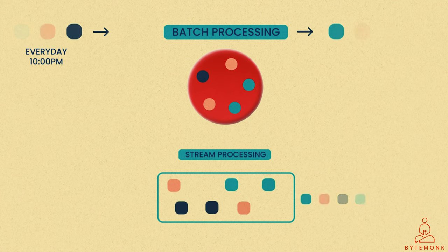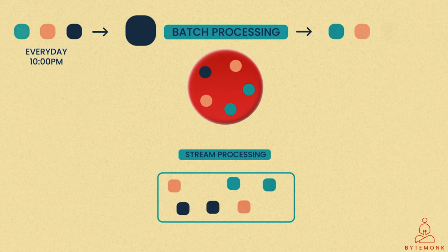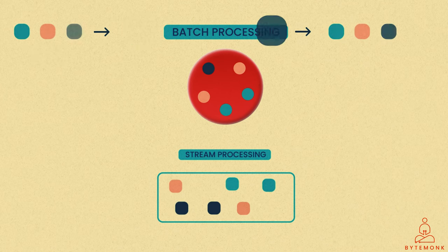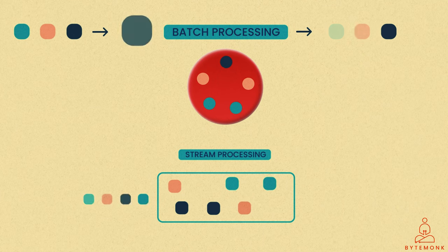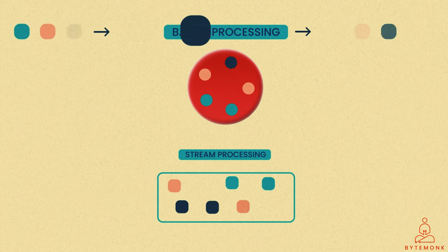So while stream processing is ideal for real-time insights, batch processing is often used for tasks that don't require immediate results or where data can be collected over time before analysis. Batch processing is old school but still a very powerful data processing method that every software engineer should know.